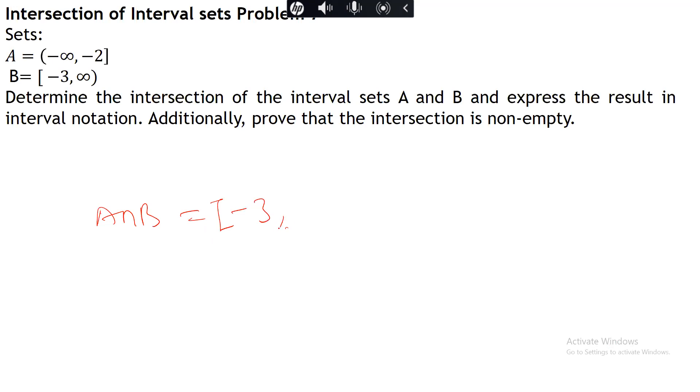Now A intersection B is minus 3, minus 2, because of this. So that is the trick. Now because it includes values that are in both A and B.